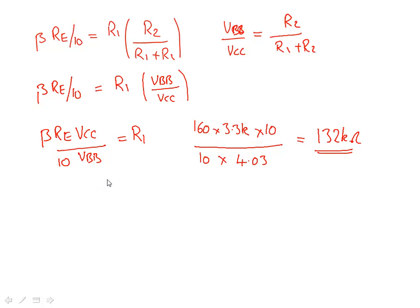So now all I need to do is substitute into a different equation to calculate R2, very simple. We could use this expression up here. We could say R1 divided by VCC over VBB minus 1 is equal to R2. So let's put some numbers in: 132k all divided by 10 divided by 4.03, subtract 1, is equal to 88 kiloohms.